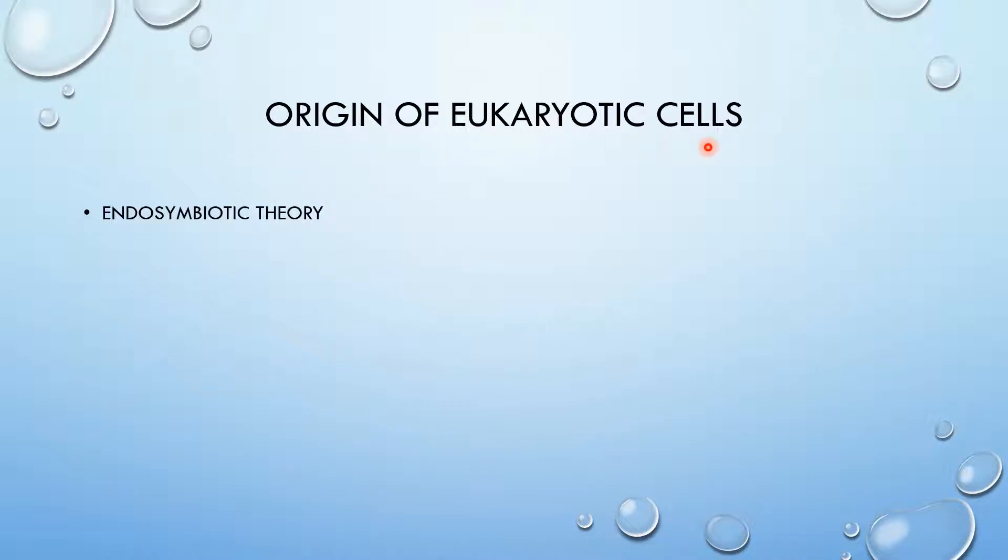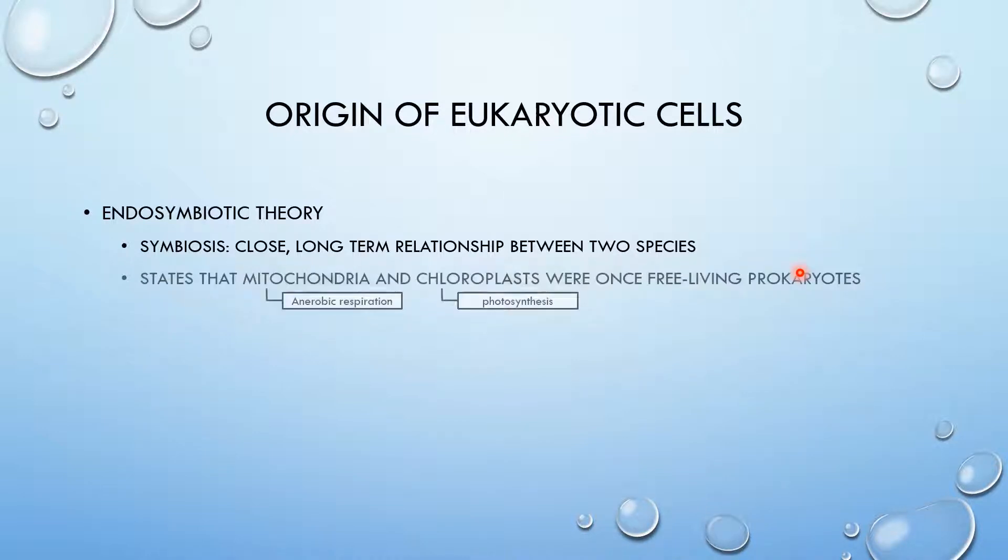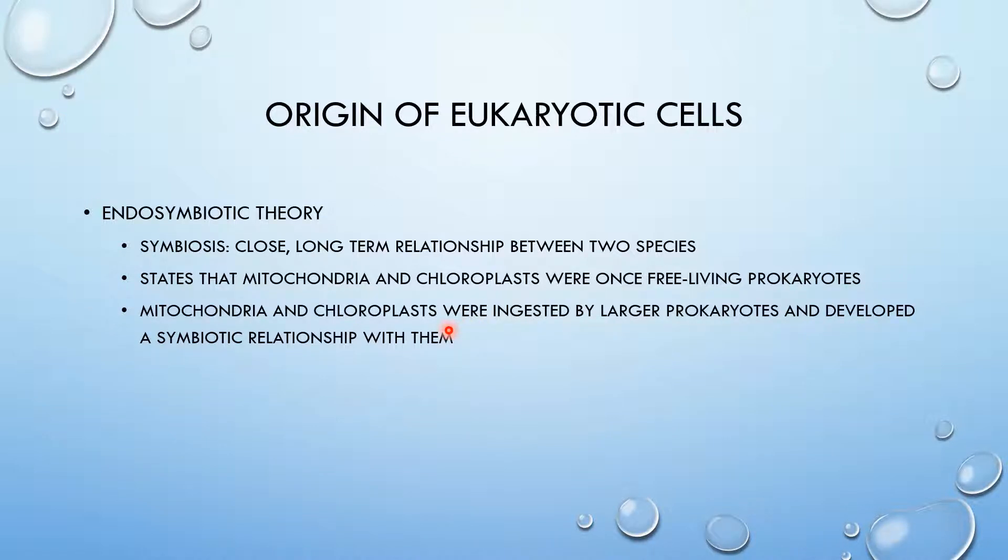Now, then how did eukaryotic cells arise? The most popular explanation now is the endosymbiotic theory. Symbiosis is a close, long-term relationship between two species. So basically, the endosymbiotic theory states that mitochondria, which partake in aerobic respiration, and chloroplasts, which partake in photosynthesis—if you guys remember, I went over organelles in unit 1.2—were once free-living prokaryotes. So these two organelles were once prokaryotes. Mitochondria and chloroplasts were ingested by larger prokaryotes and developed a symbiotic relationship with them, according to the endosymbiotic theory.